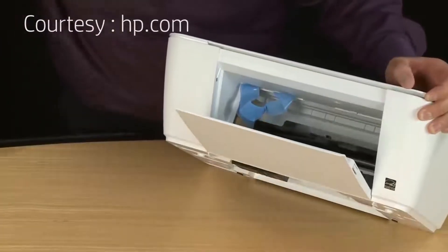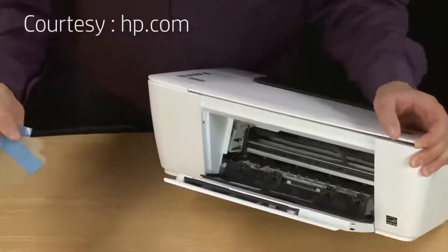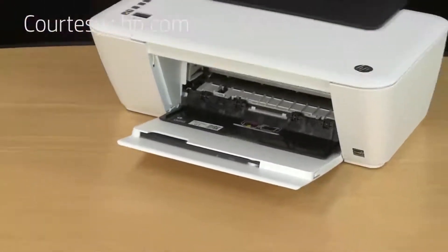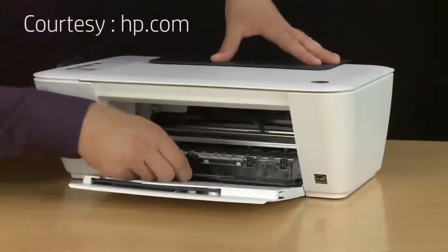If the ink access door is not open, use the tab to open it. You can then completely remove this last piece of tape. Make sure you also remove the piece of cardboard that's attached. Once all the tape is removed, you can go ahead and close the ink access door.